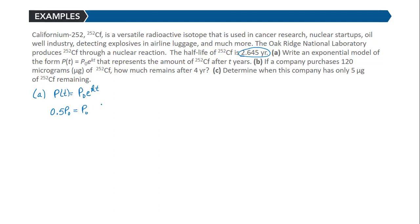Our initial amount, again we don't care what it is, that's equal to e^(k) we don't know. The time for it to decay is 2.645 years. Notice when we divide each side by P₀, that P₀ divides out on each side. So we're just left with 0.5 = e^(2.645k).